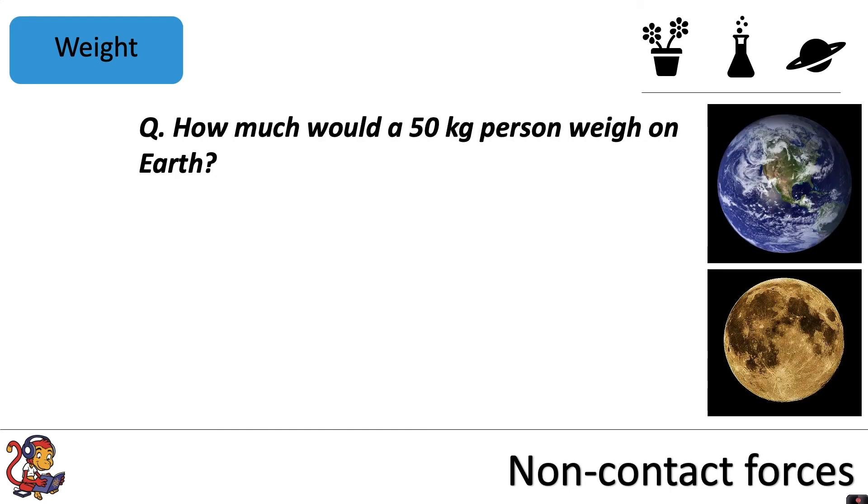So our weight would be different if we were to answer the question how much would a 50 kilogram person weigh on Earth? We've done that question. We said that 50 multiplied by 9.8 would be 490 newtons.